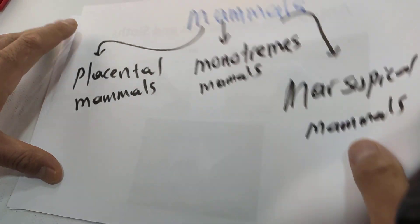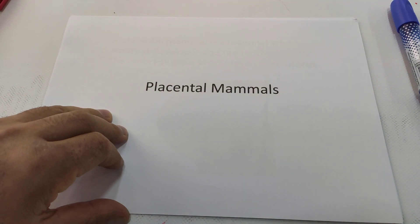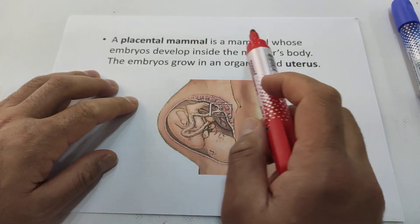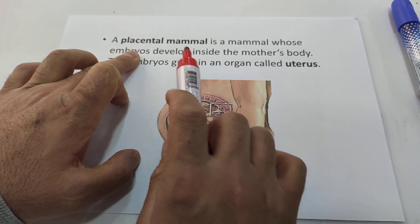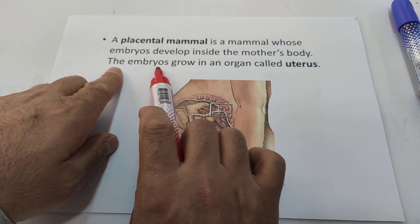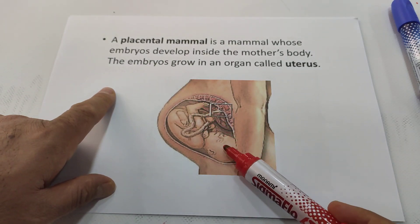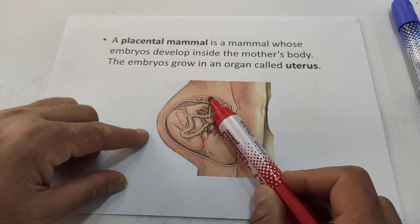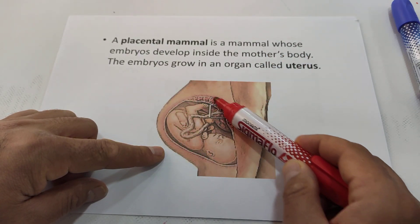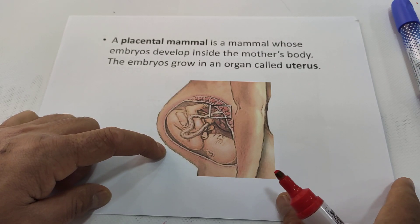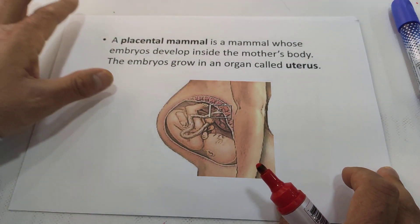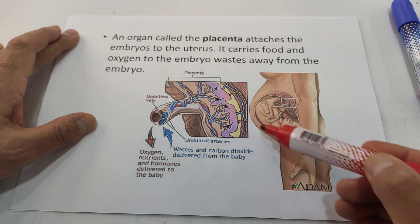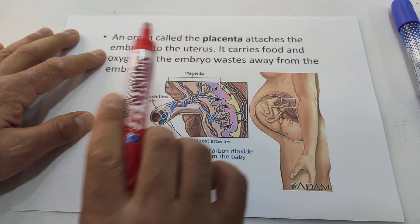Let us start with placental mammals. What is a placental mammal? A placental mammal is a mammal whose embryos — meaning babies — develop inside the mother's body. The embryos grow in an organ called the uterus. The baby growing inside the mother's body is called a placental mammal. The place shown where the baby grows is called the placenta. The placenta attaches the embryo to the uterus.